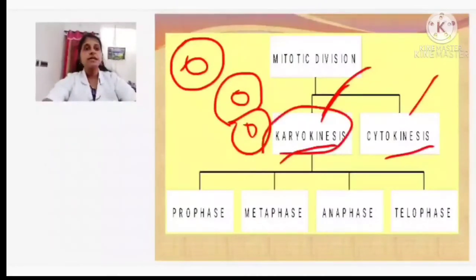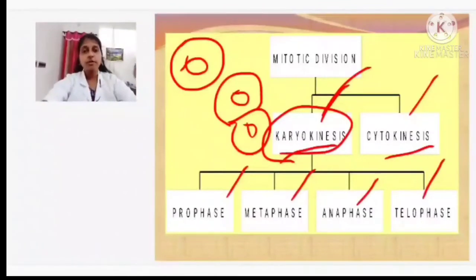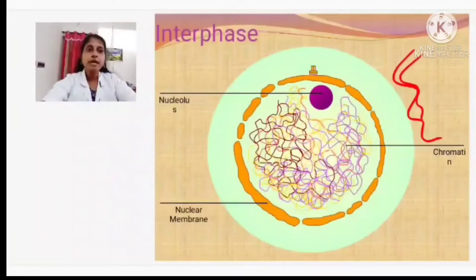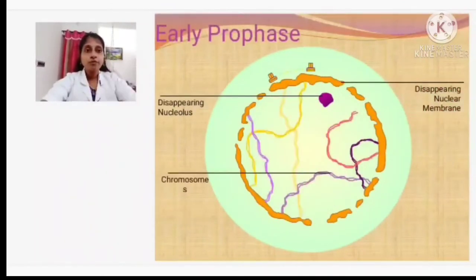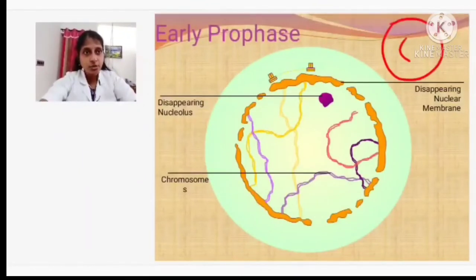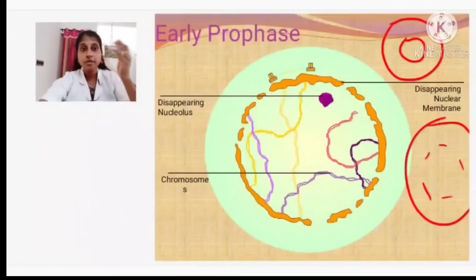In the interphase, all chromosomes are present with their duplicate copies. In prophase, the nuclear membrane disappears. This is the first change. Second, the centrosome divides and forms two centrioles — note that centrosome is present in animal cells, not plant cells. The two centrioles move towards opposite poles of the cell.